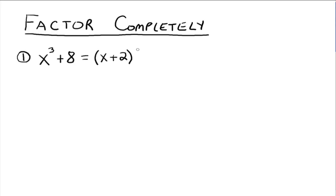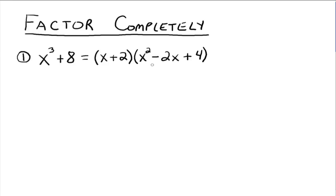Once we have that, we can get the trinomial part. Take the first something, x, and square it to get x squared. The sign of the middle term is always opposite what's inside the binomial, so this is a minus. Then take the two somethings, x and 2, and multiply them together to get 2x. The sign of the last term is always a plus, and the last term is the last part of the binomial squared: 2 squared equals 4. So x cubed plus 8 factors into x plus 2 times x squared minus 2x plus 4. This trinomial will not factor any further.